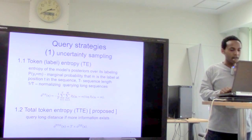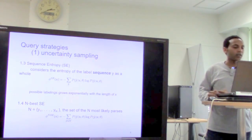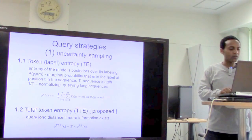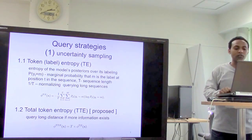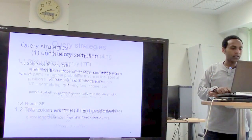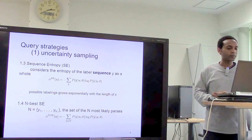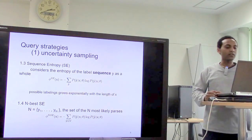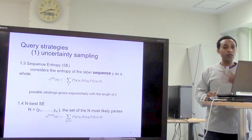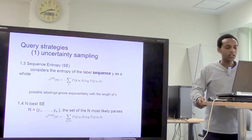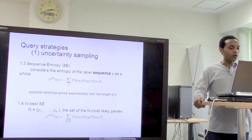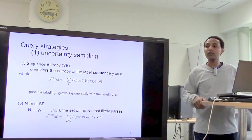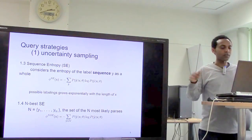The third uncertainty sampling approach is sequence entropy, which considers the entropy of the label sequence as a whole. Unlike total token entropy, which aggregates individual entropies, sequence entropy considers the whole sequence. However, labeling choices can grow exponentially with sequence length. To address this, they proposed N-best sequence entropy, which filters to the N-best parses according to Viterbi path selection.